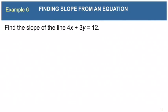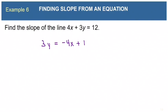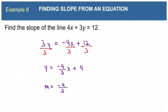Example 6: find the slope of the line 4x plus 3y equals 12. This equation is in standard form — a is positive, x and y terms are on the left, c is on the right, and there's no common factor. To find the slope, solve for y: move 4x to the right side (making it negative), then divide each term by 3. This gives y equals negative four-thirds x plus 4. The slope is the coefficient of x, which is negative four-thirds.